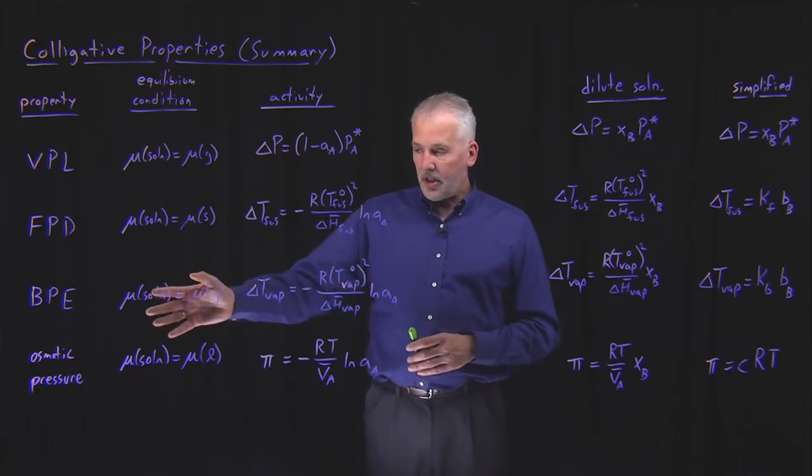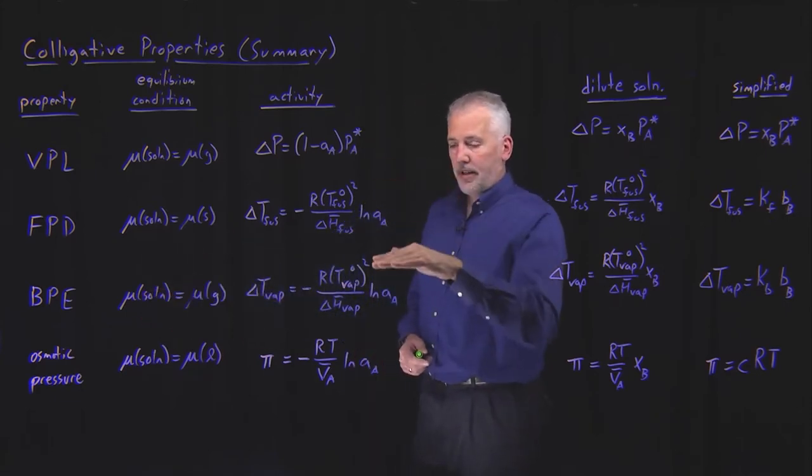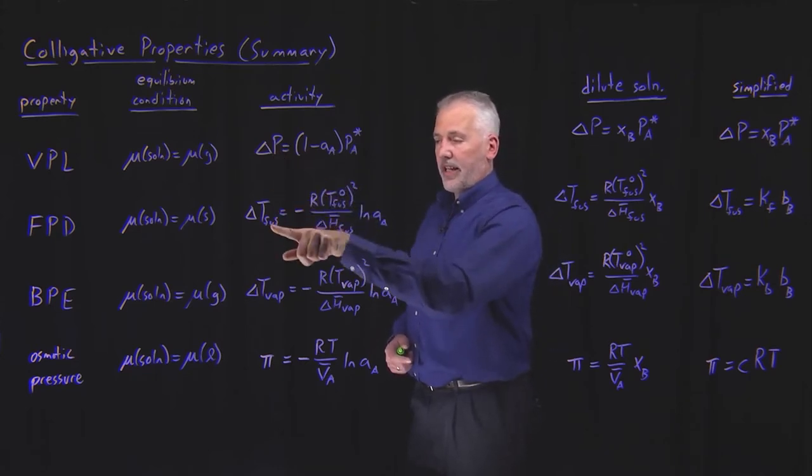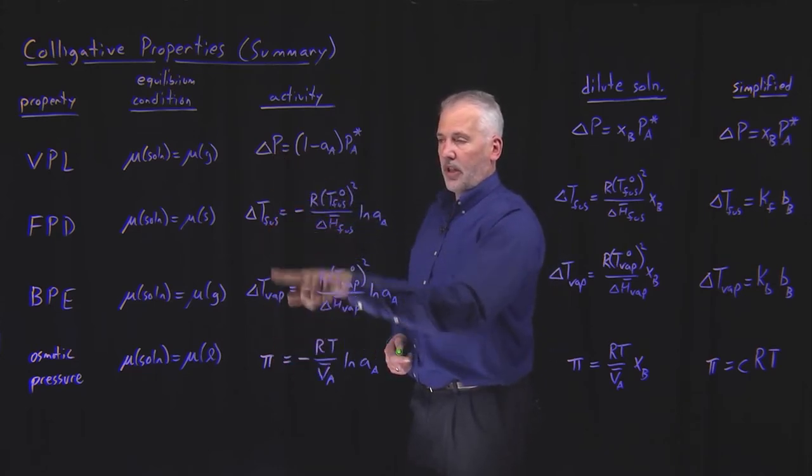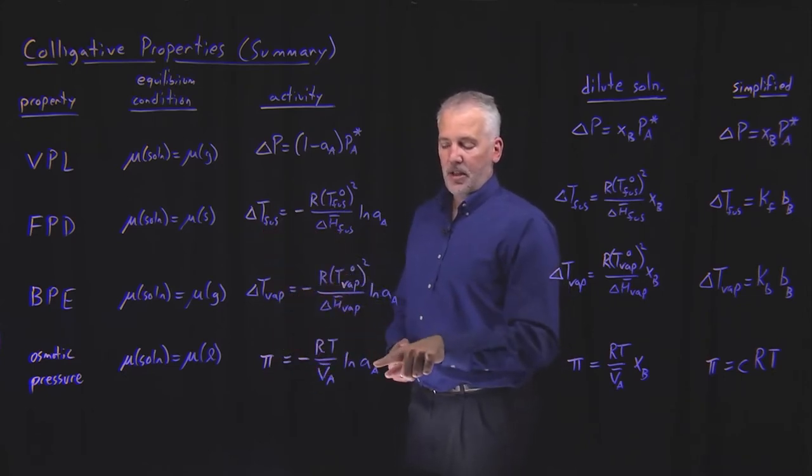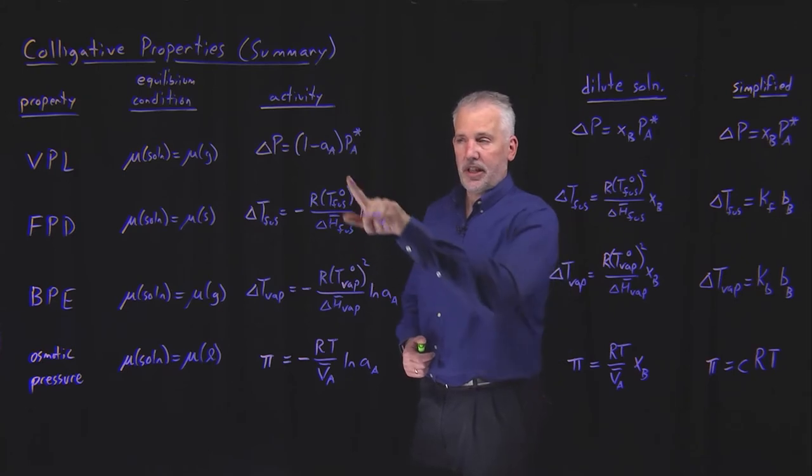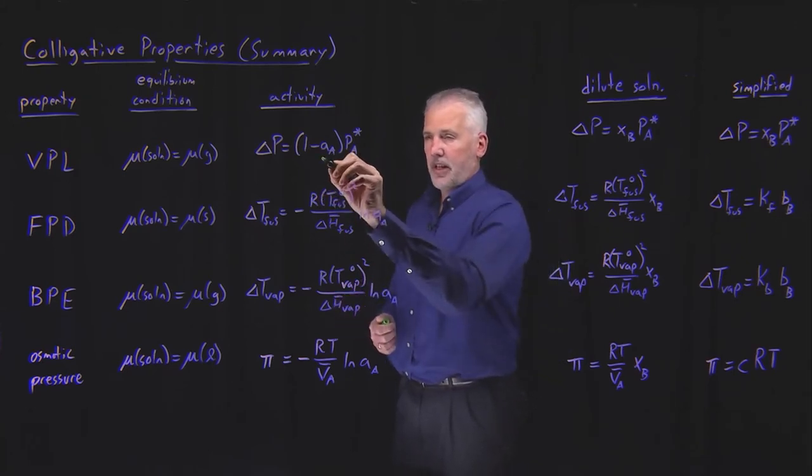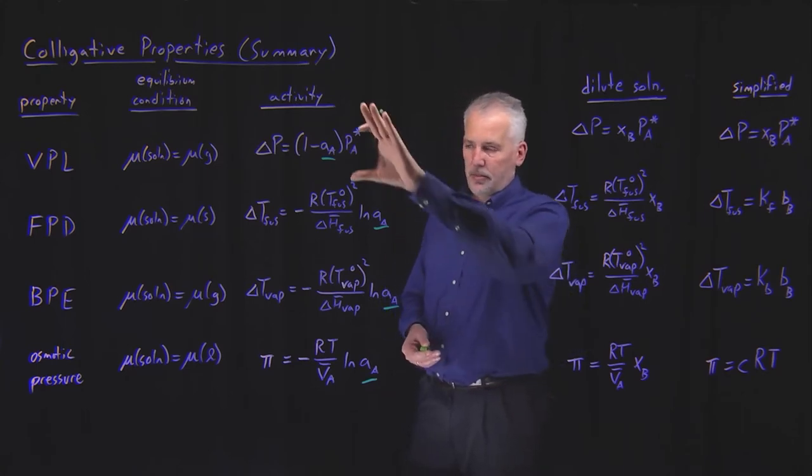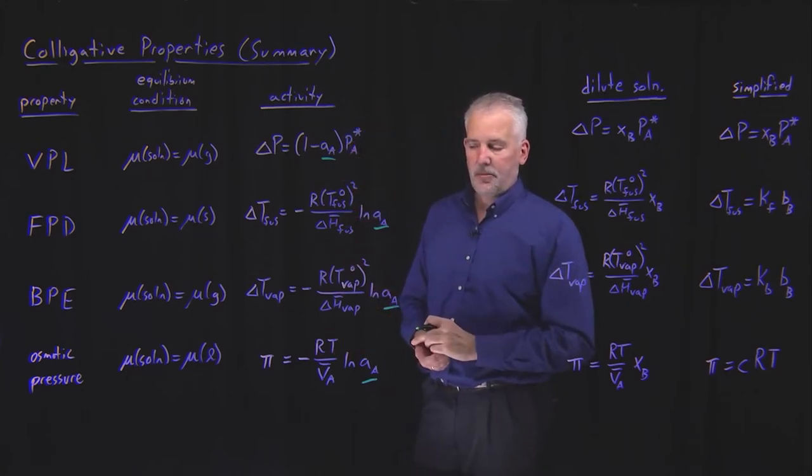So from that starting point, we were able to derive expressions for how the size of that colligative property, vapor pressure, freezing point, boiling point, osmotic pressure, how that depends on the activity of the solvent in each case. Each one of these expressions involves the activity of the solvent. So these are the most fundamental versions of the expressions.